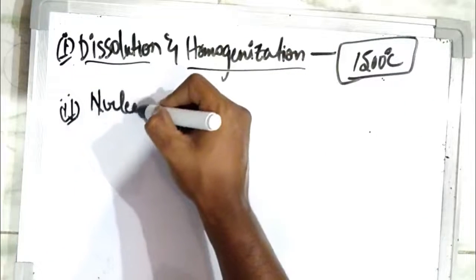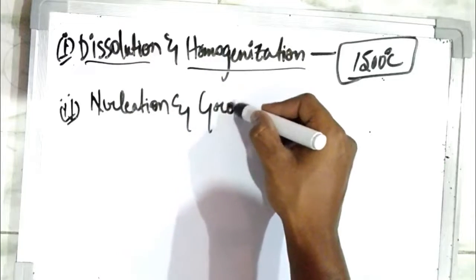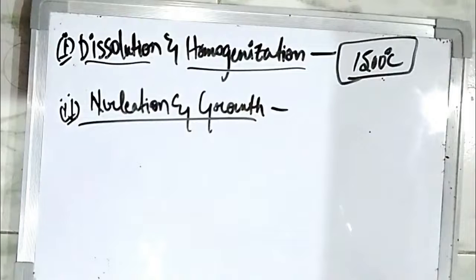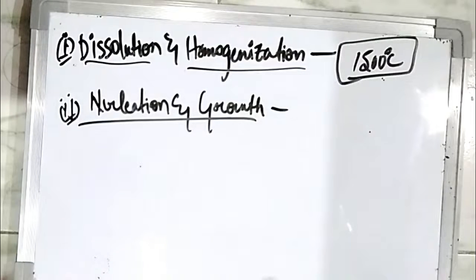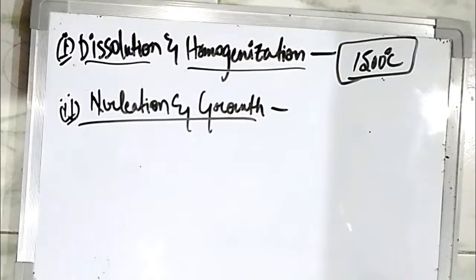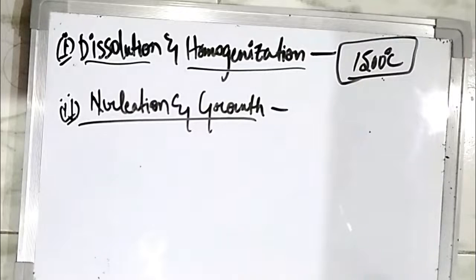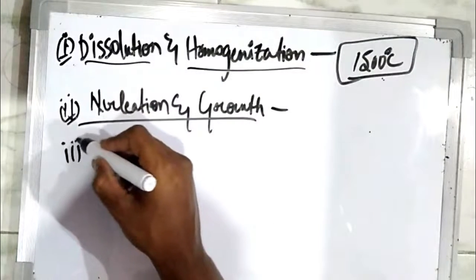The next step is nucleation and growth. Nucleation is done at interfaces — heterogeneous nucleation — and the deoxidation products are nucleated. After nucleation, growth occurs, which is the process of increasing the size of the product. A liquid product can easily grow in size compared to a solid product, which is why ferro alloys are used — they can be easily melted to form a liquid product that nucleates and grows.